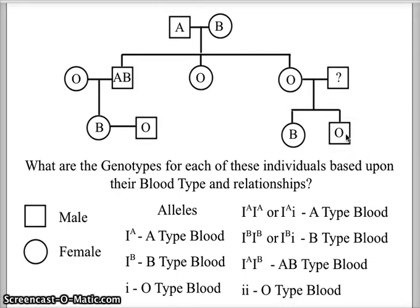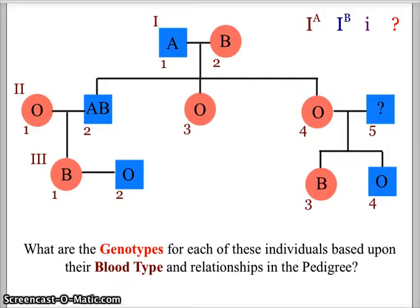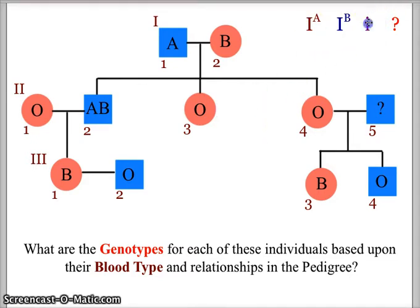Our job is to figure out the genotypes for each of these individuals based on their relationship in the pedigree. Let's begin by using the evidence available to identify the ones we know absolutely for sure. We know that all of the people with O blood have little i, little i.